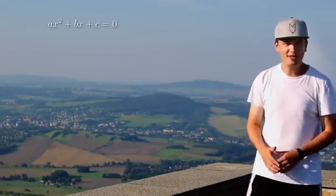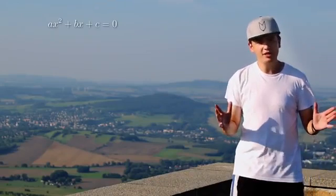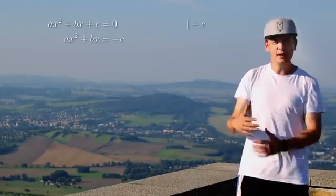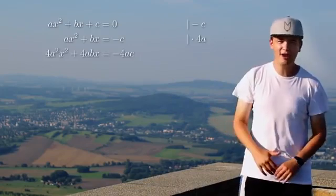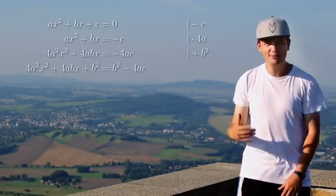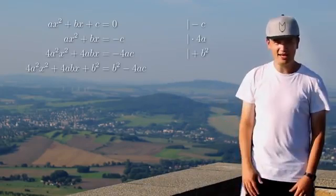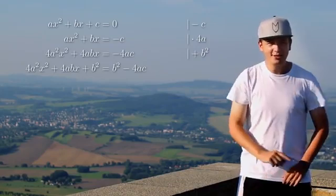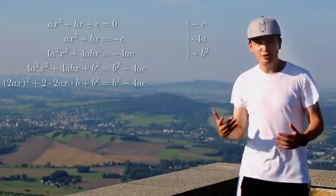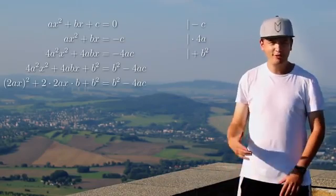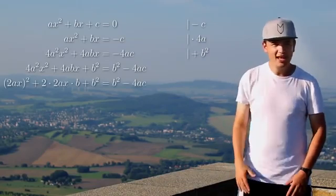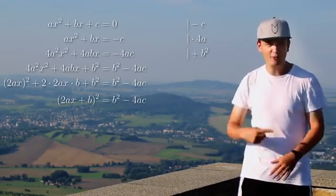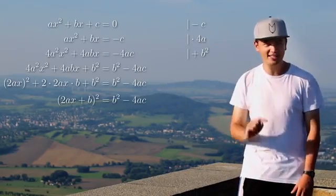Let's start with our equation and our job is going to be solving this now for x. So let's take minus c, multiply by 4a, and if you now add b squared, it all looks way too complicated. But don't be scared. Just take a close look at the left side and you see there's a binomial formula with 2ax and b. So all together this is the square of 2ax plus b, and now we have only one x.